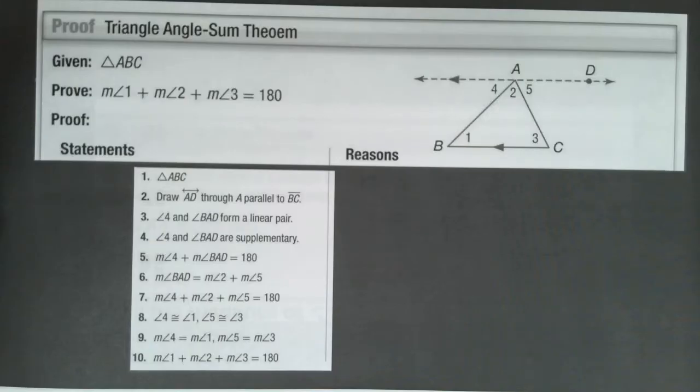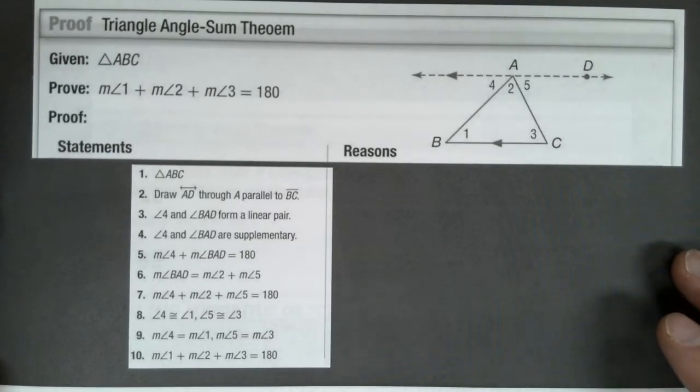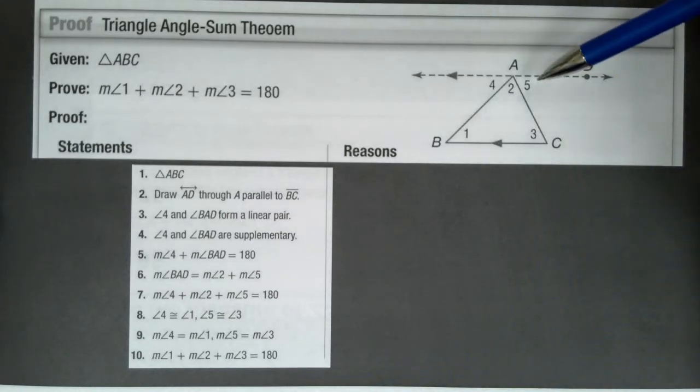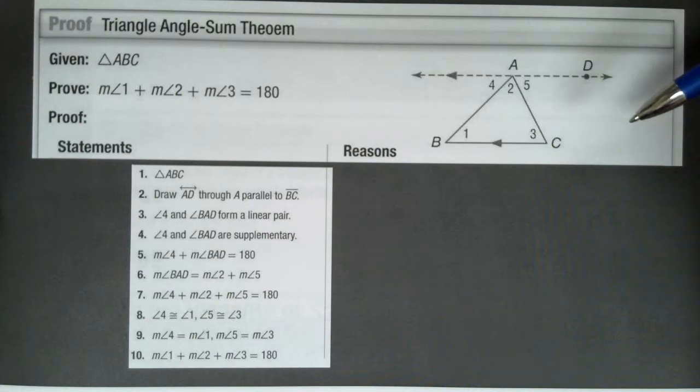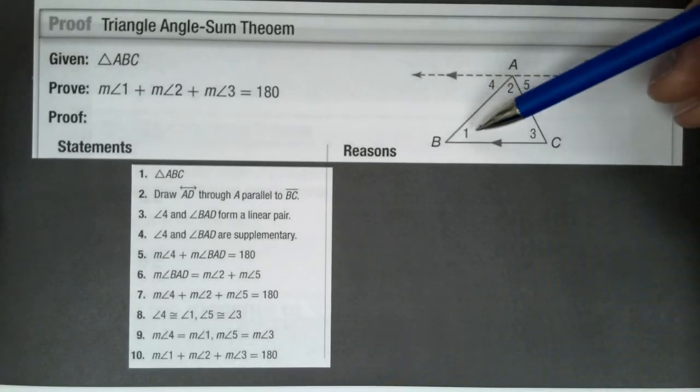On this next slide you really don't need to write anything down. This is just kind of a little proof that proves to us why we can say that all three of the angles in the triangle add up to 180. So hopefully you notice in this picture that four, two, and five all make a straight line, so that's 180 degrees. We just got done doing parallel lines, and if you think about this, angles one and four—these are alternate interior angles if you're looking at these two lines here being parallel.